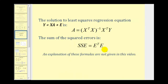We're not going to derive these formulas here, but to solve this matrix equation, A — which gives us the y-intercept and slope — is equal to the inverse of the product of the transpose of matrix x and matrix x, times the product of the transpose of matrix x and matrix y. The sum of the squared errors is equal to the transpose of matrix E times matrix E. Let's take a look at an example.